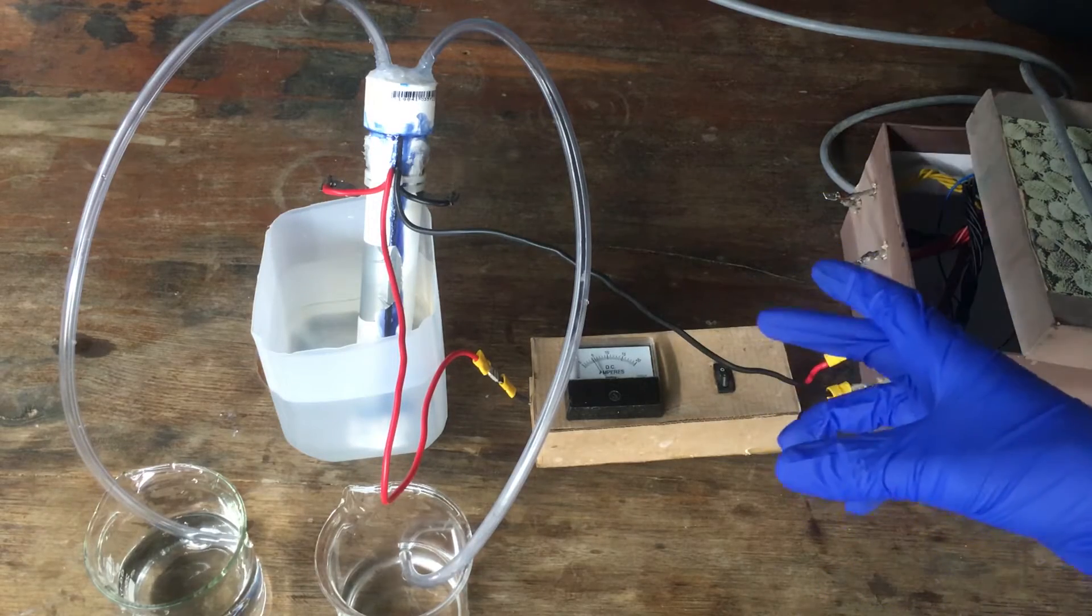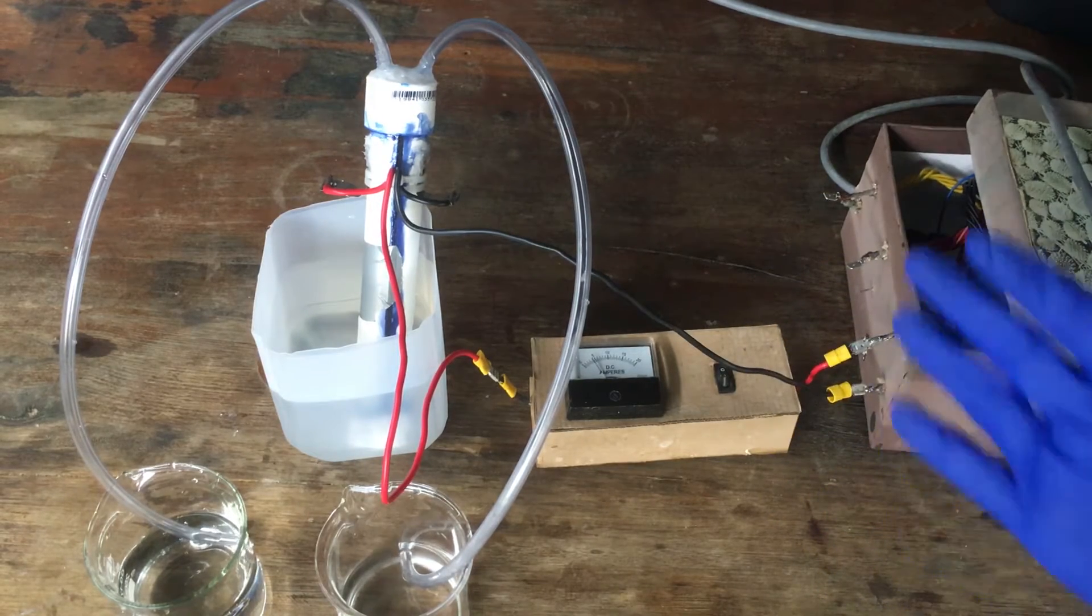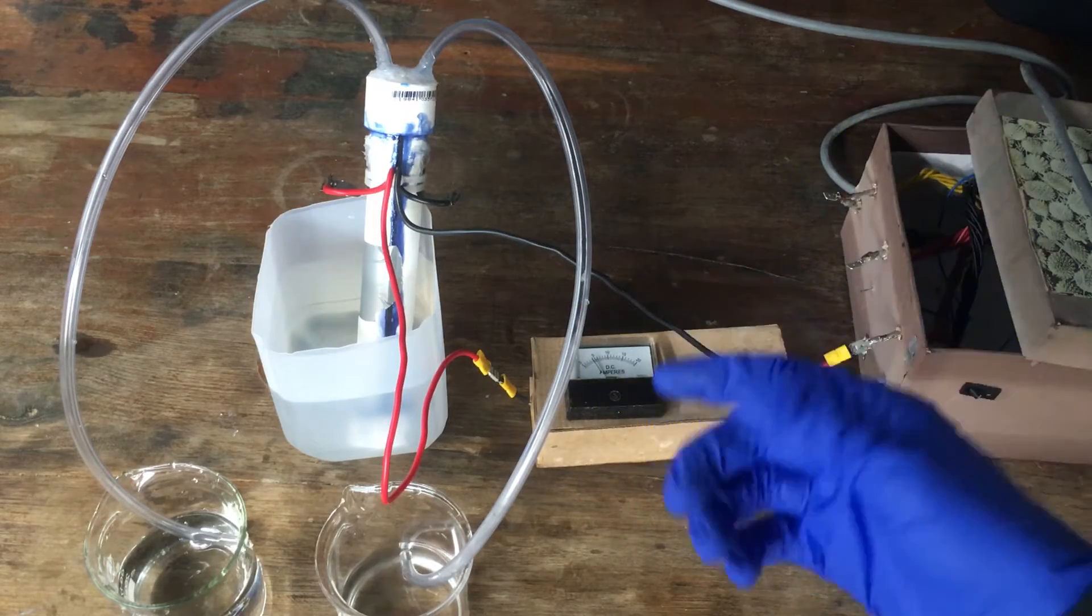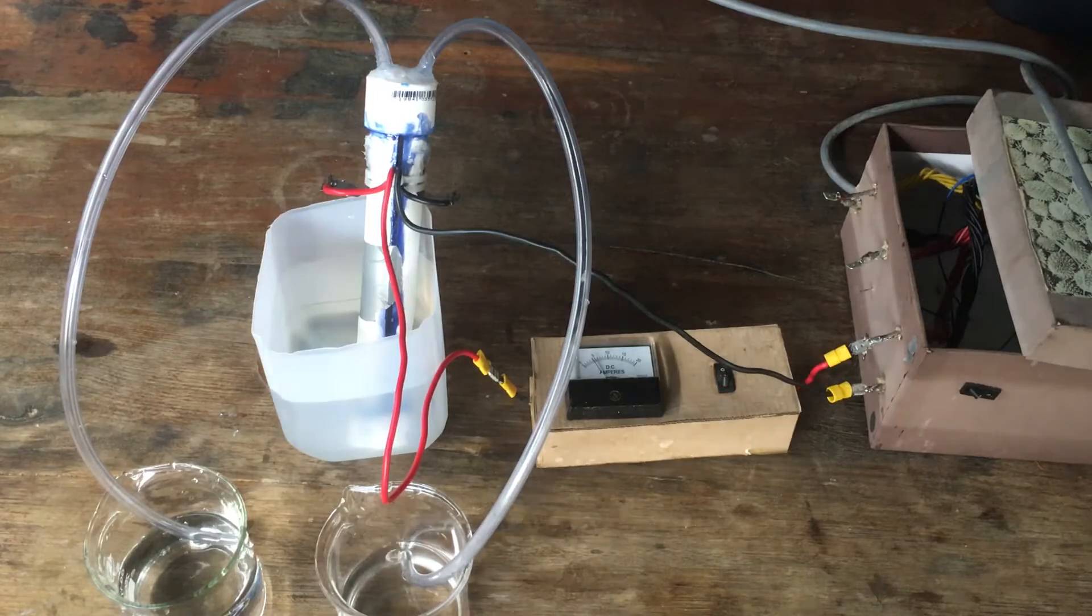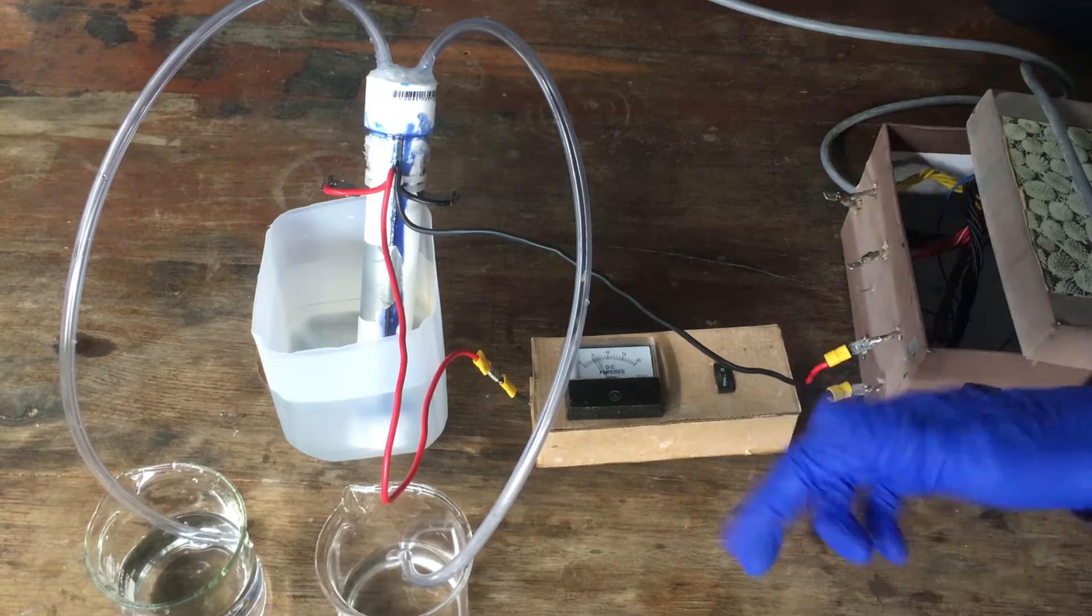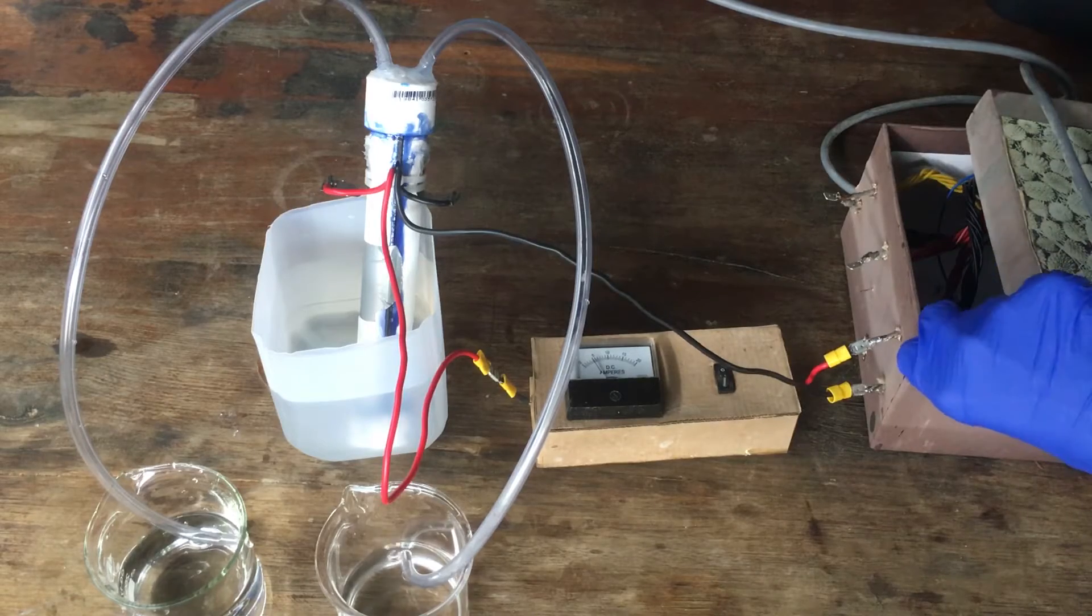Now what I really want to know is how well will this thing run at 5 volts, because at a higher voltage we are able to put more current through the cell and the current is what determines the gas rate of production. So applying 5 volts should drastically increase the amount of gas that we get. So we will give that a go now.